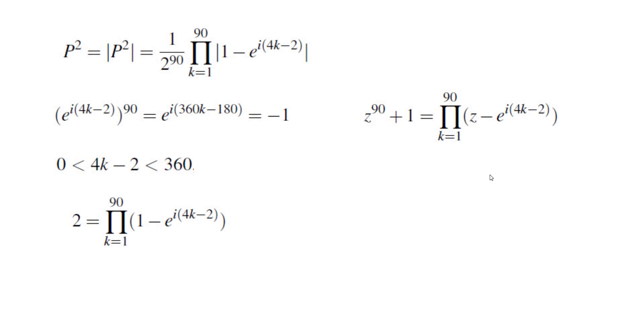So we substitute z = 1, and we get 2 equals the product of (1 - e^(i(4k-2))) where k ranges from 1 to 90,